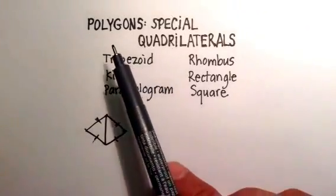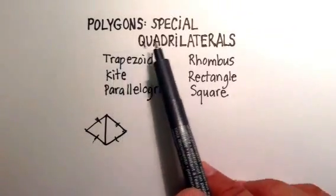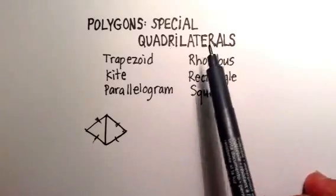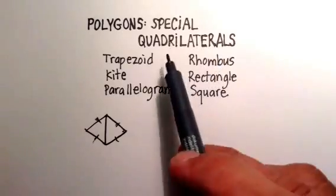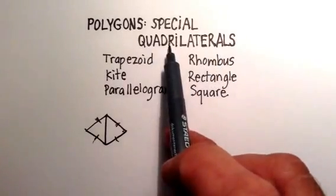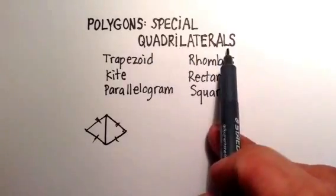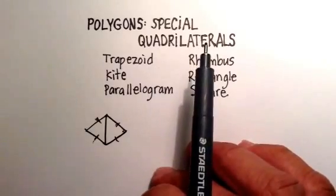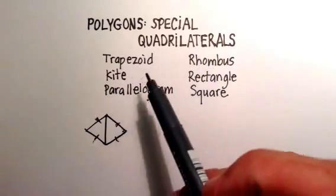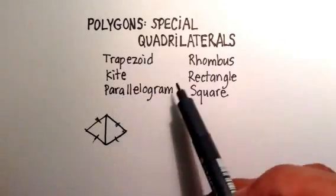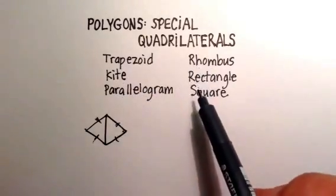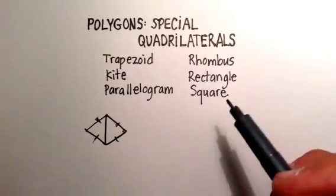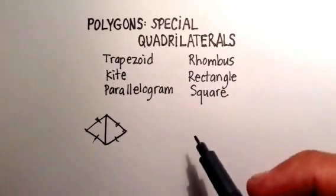In this video we're going to go over some special polygons called special quadrilaterals. As the name implies, quad meaning four, lateral meaning side, these are four-sided figures. We're going to go through six specific kinds, because these are rather important in the world. We use them for all sorts of things: architecture, design, that sort of thing.